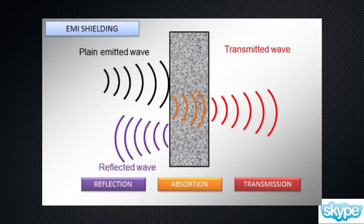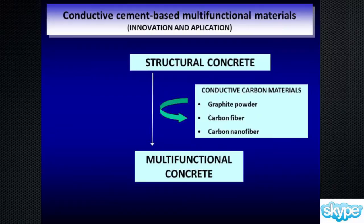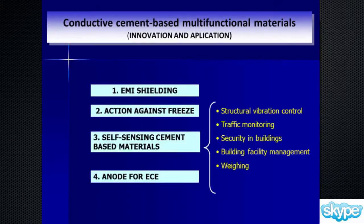So we can have a new versatile material much more capable than just concrete. By means of this type of material, we can try to introduce new ways to prevent, for example, corrosion caused by dyes and salts, just by using a heating element in the bridge, for example.